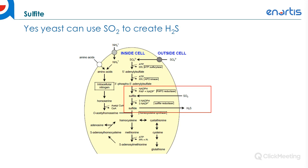Another source of reduction is SO2. Yeast can form H2S through various pathways — they can take up sulfate or SO2 from outside the cell, and that can become a hydrogen sulfide byproduct. SO2 can play a strong role in H2S formation depending on the yeast strain used. This is yet another reason to control your sulfite additions as much as possible prior to and at the start of fermentation.